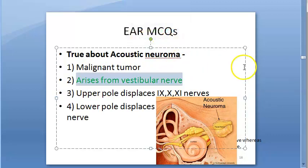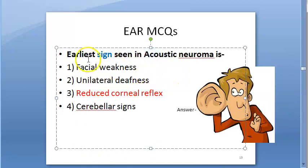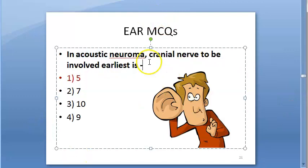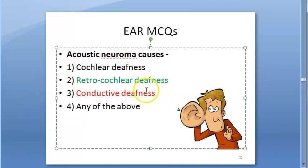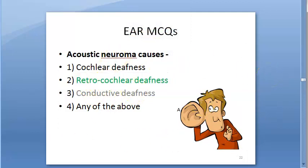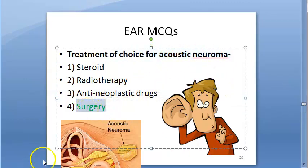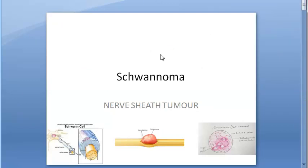Some MCQ points: acoustic neuroma arises from the vestibular nerve — true. The earliest symptom is sensorineural hearing loss, and the earliest sign is reduced corneal reflex (due to fifth cranial nerve involvement after eighth). Acoustic neuroma causes retrocochlear deafness. Treatment of choice is surgery.